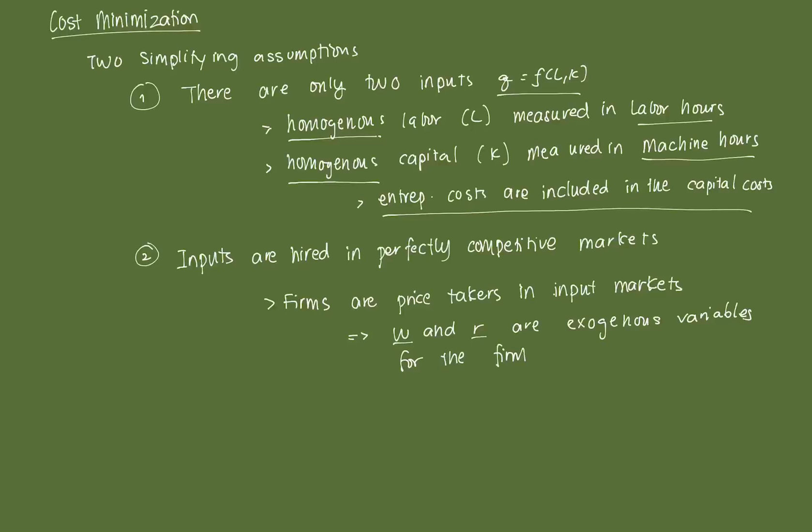Second assumption, and something that I've alluded to in the previous videos I've had, is that the inputs are hired in a perfectly competitive market. What does that mean? It means that the wage that you pay a laborer and the rental rate of capital that's born out of the production process, you have no control. Each individual firm has no control over that. That's purely determined by the market.